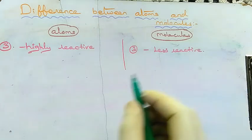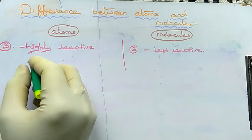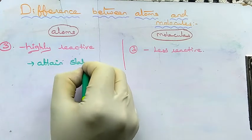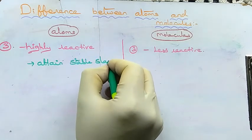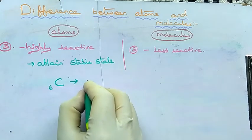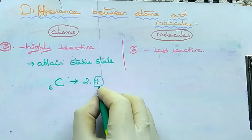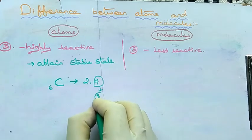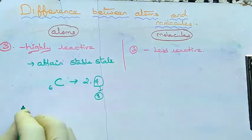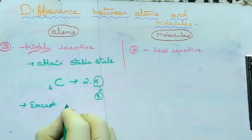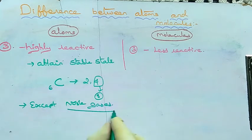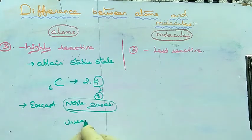Third difference: atoms are highly reactive whereas molecules are less reactive. To attain stable state, all atoms form bonds with other atoms. For example, carbon has atomic number six and electronic configuration 2,4 — it needs four more electrons to attain the octet state. All atoms except noble gases are highly reactive to attain stable state, while noble gases are unreactive because they are already stable.